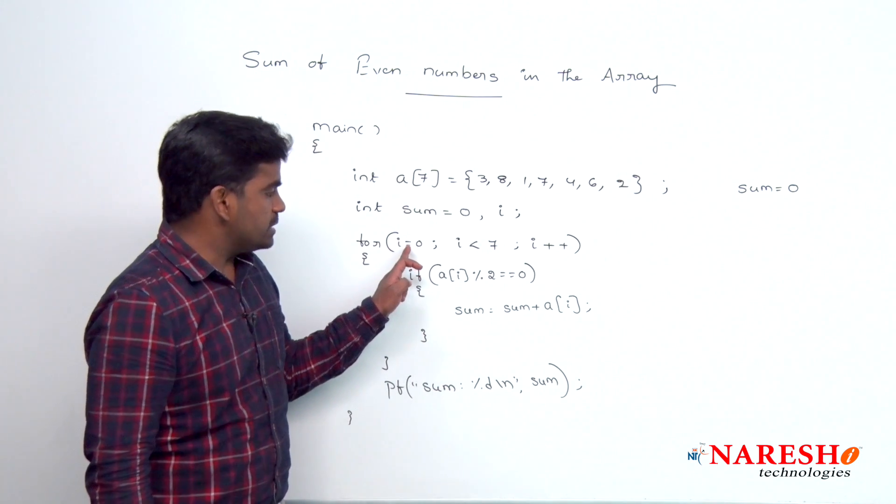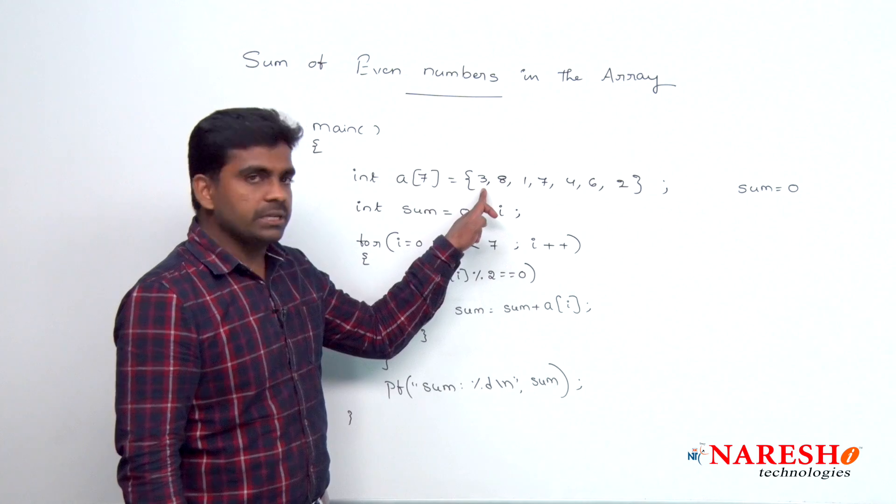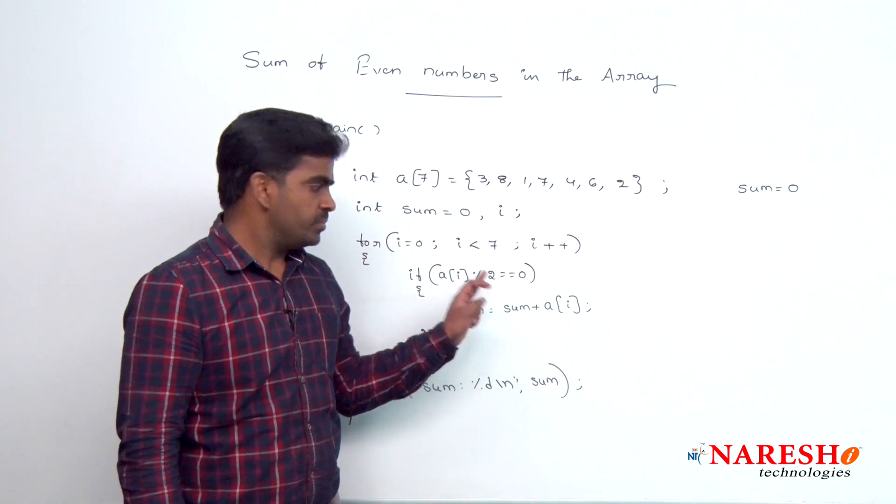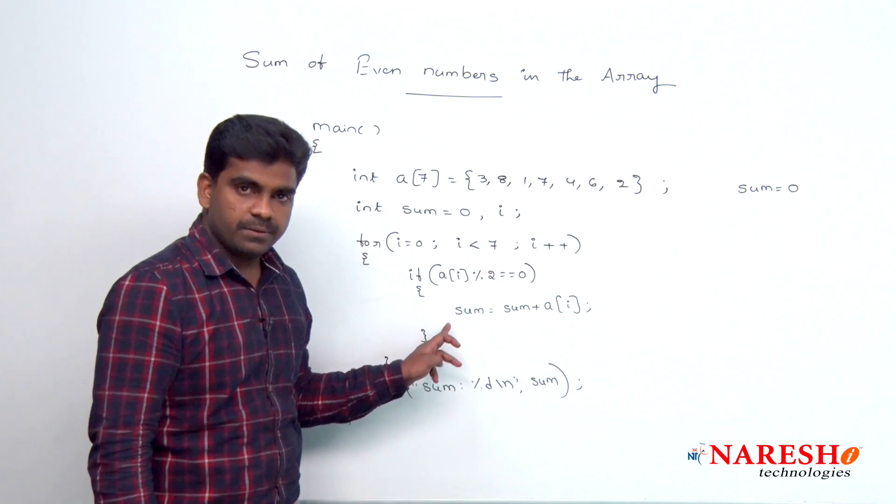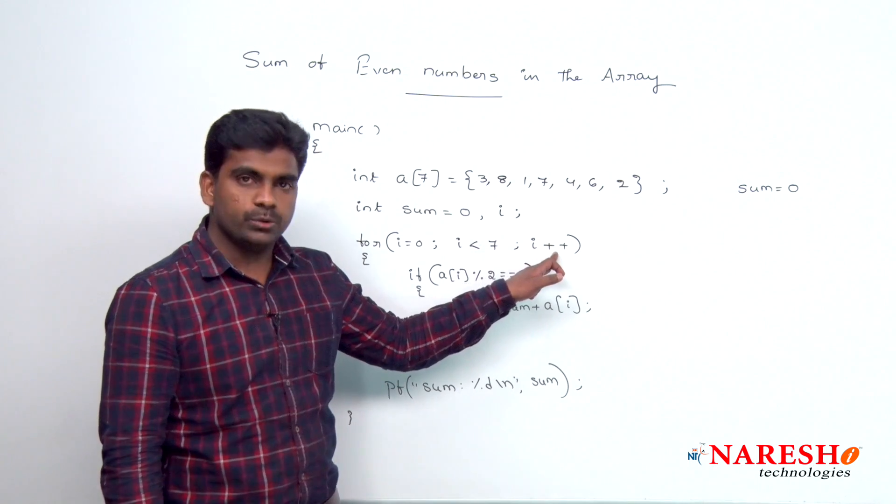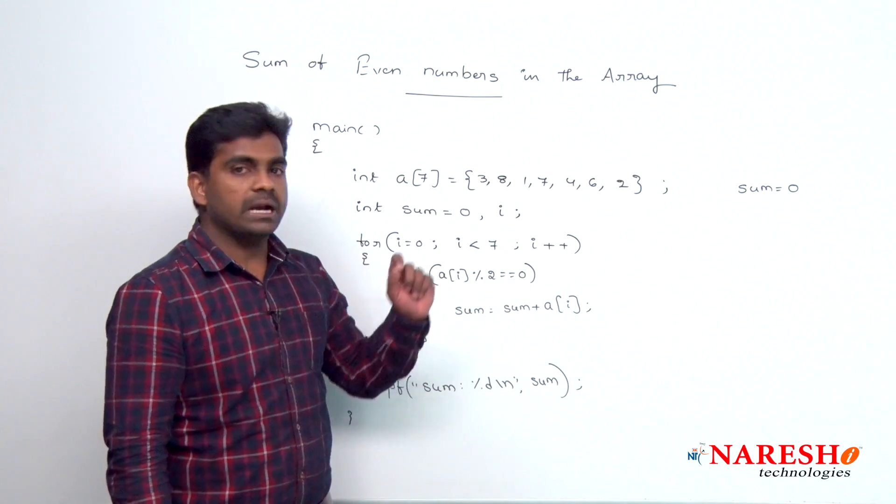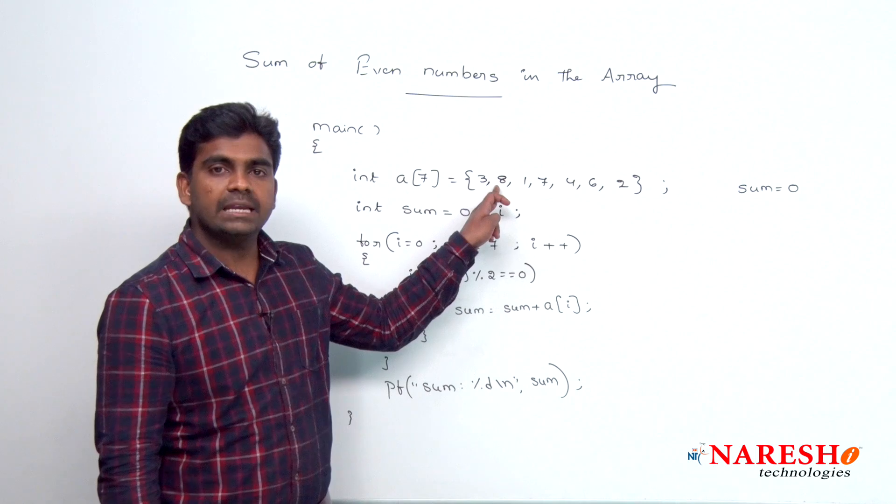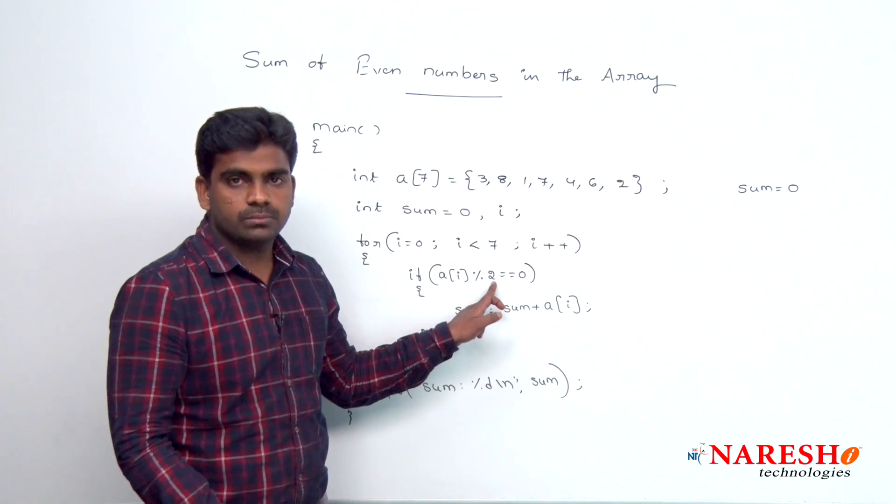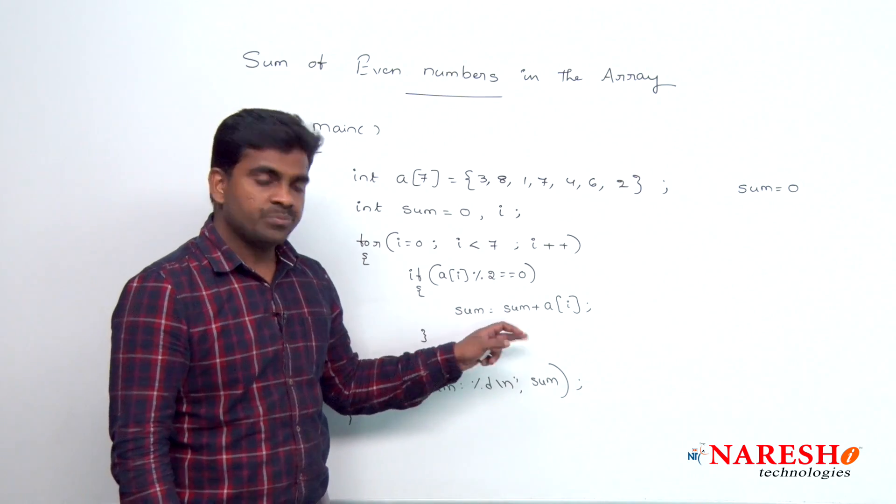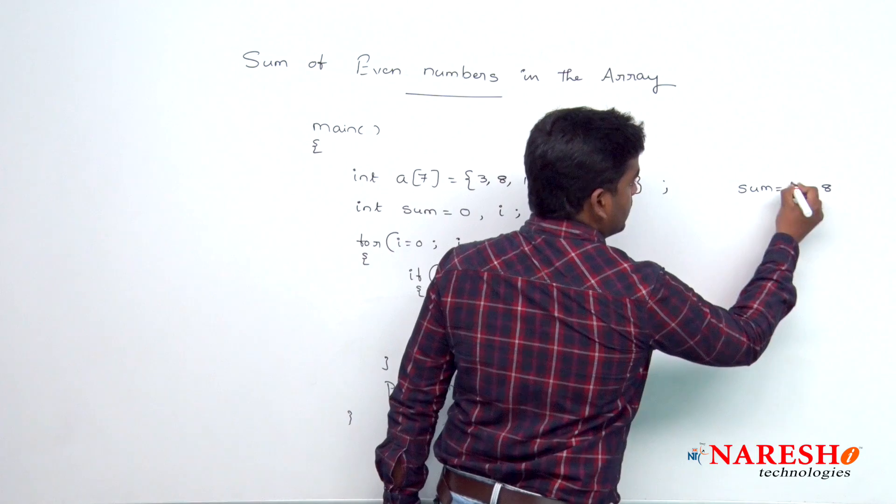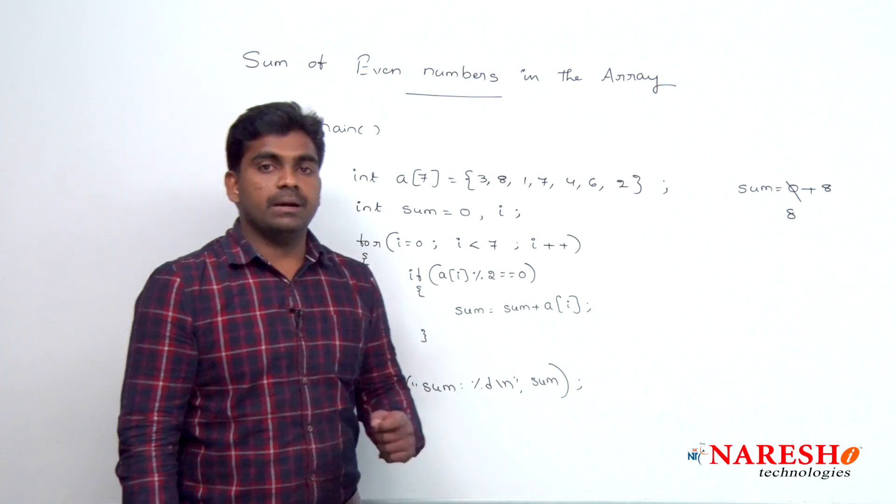First, i value is 0, a of 0 means 3, 3 mod 2 equal to 0, condition false. Then if block will be terminated, it will come out. And next it will continue with i value increment, i value becomes 1. In the first location, what is the element? 8. 8 is divisible by 2, yes condition true. So, it will come inside, that 8 will be added to sum, 0 plus 8. Here the sum value becomes 8.